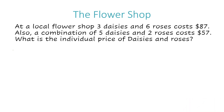So first I'm going to start with that first sentence. It says at a local flower shop, three daisies and six roses cost $87. I'm going to write that almost exactly as it is but in math terms. So I'm going to write three, and instead of daisies I'll use the variable D. Then it says and six roses — when I see 'and' in math, that's typically going to be plus. So three D plus six R equals $87.